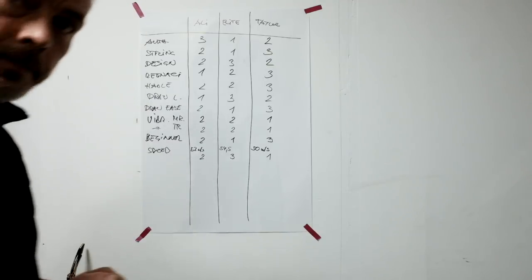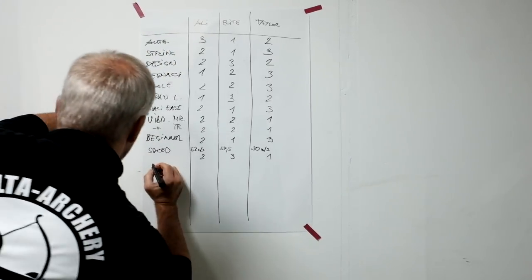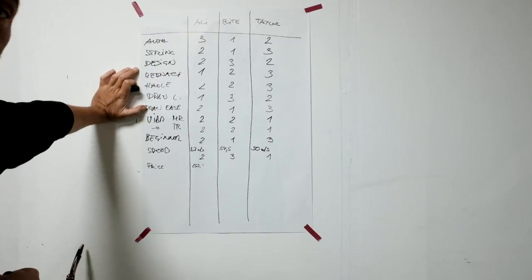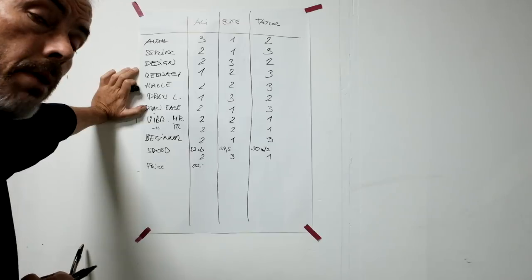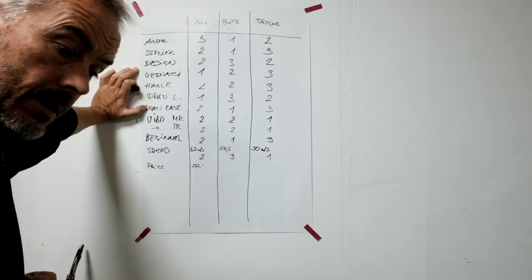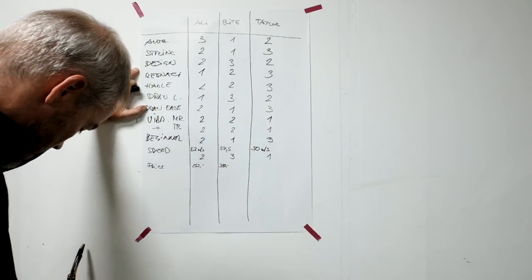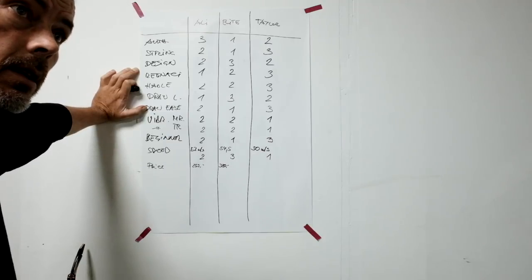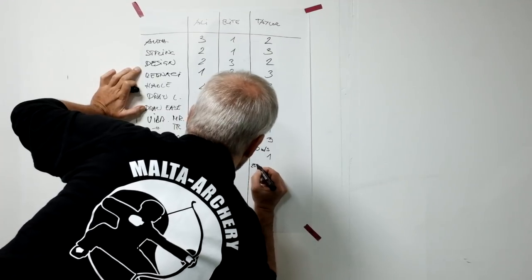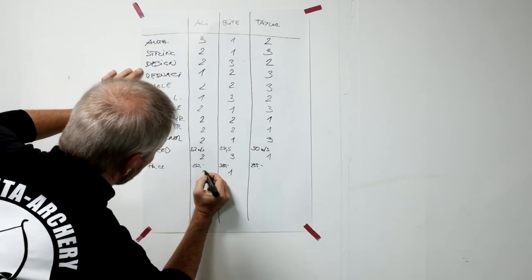And now we need to talk about the price. Price of Ali Bow: 300 dollars including shipping is 255 euros. Elite Bogen is 349 plus shipping. International shipping I guess will be roughly 30 euros, so we are at 380 euros. And the Taylor Archery bow will be roughly 250, 260 euros, same as Ali Bow, 255. So we have here one point for Elite, and two and two for Ali Bow and Taylor.